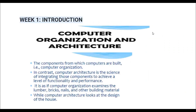Let us define first what is computer organization and architecture. Computer organization refers to the components from which computers are built. In contrast, computer architecture is the science of integrating those components to achieve a level of functionality and performance. It is as if computer organization examines the lumber, bricks, nails and other building materials, while computer architecture looks at the design of the house.